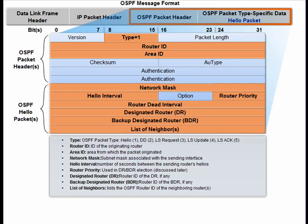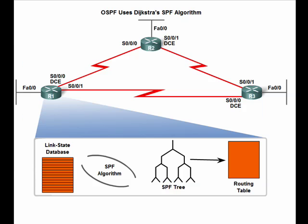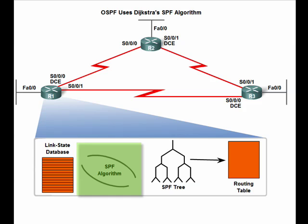Each OSPF router maintains a link state database containing the link state advertisements, or LSAs, received from all other routers. Once a router has received all the LSAs and built its own locally significant link state database, OSPF uses Dijkstra's shortest path first, or SPF, algorithm to create an SPF tree.